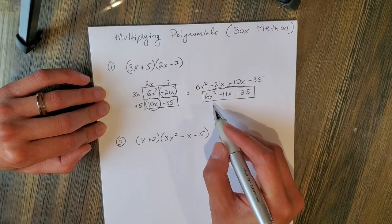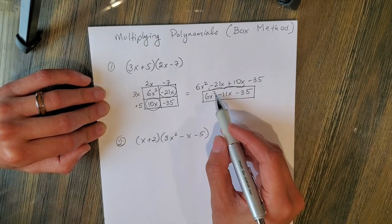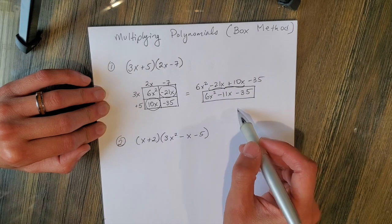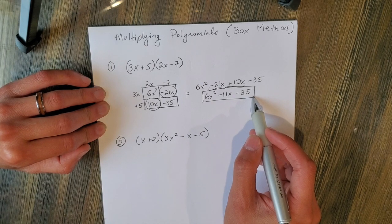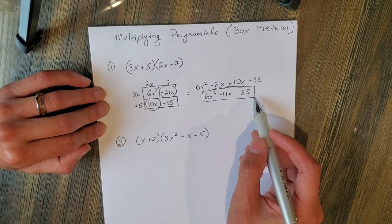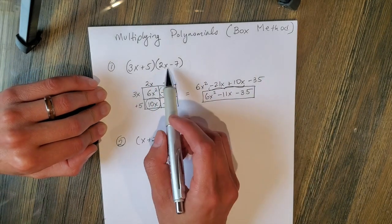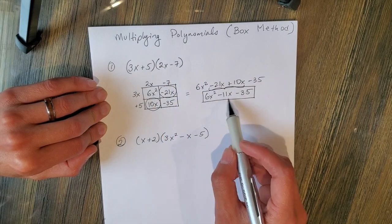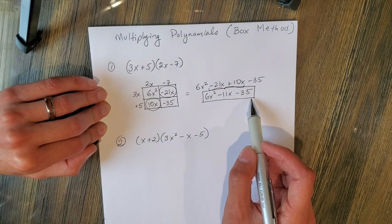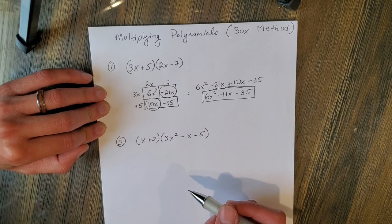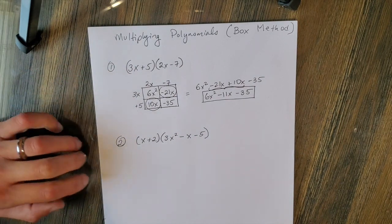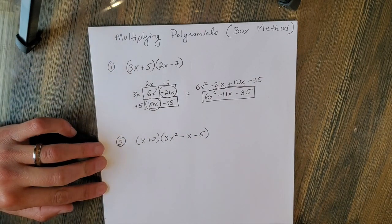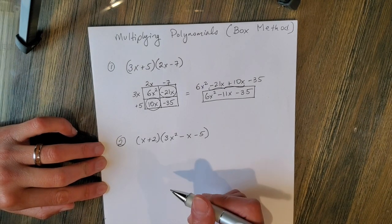This is written in standard form, which means you write from the highest degree to the lowest — x squared, x to the first, and then the constant, which you can think of as x to the zero power. Notice that I multiplied two binomials and ended up with a trinomial. Keep that in mind because some questions will ask whether the result is a binomial or trinomial.